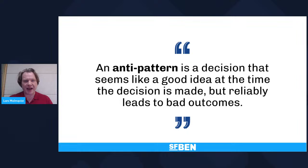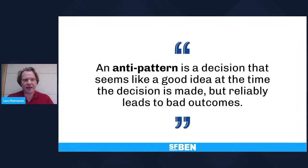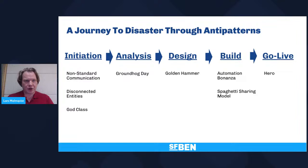Anti-patterns are different from bad practice in so far as a bad practice is just a bad idea. An anti-pattern is something where you can convince yourself it's a good idea — and given the pressures you're under and the stage the project is at, it can seem like the right decision. It might not be perfect, but it can be the right decision. However, it reliably leads to a bad outcome. In this story, I've included eight anti-patterns throughout the project timeline. In the beginning of the story, they start up by inheriting three anti-patterns from a past implementation.